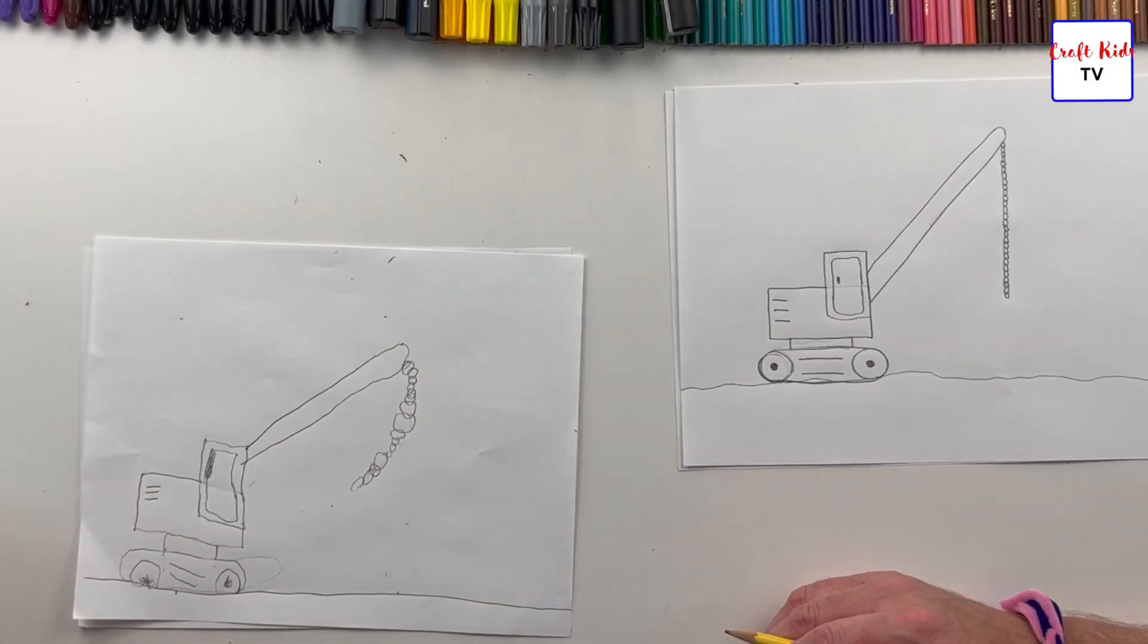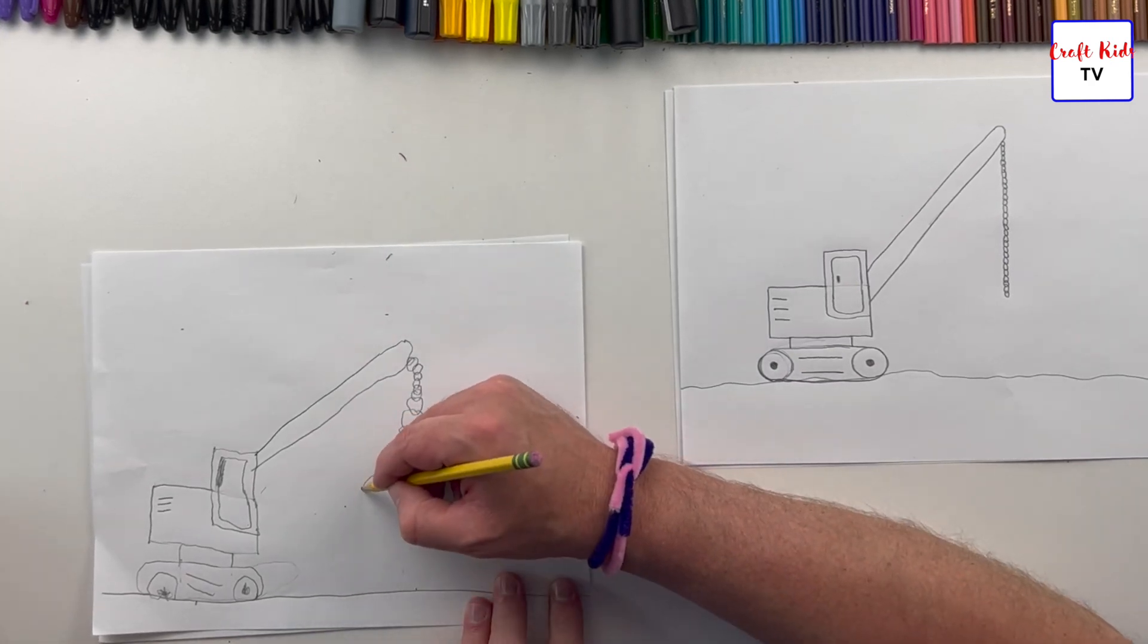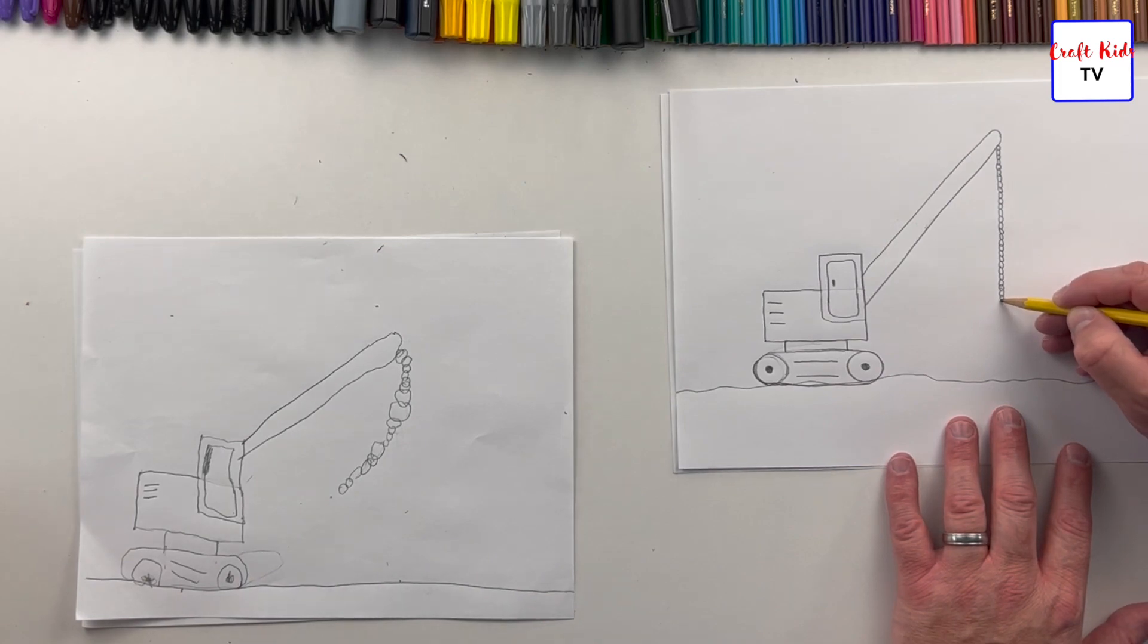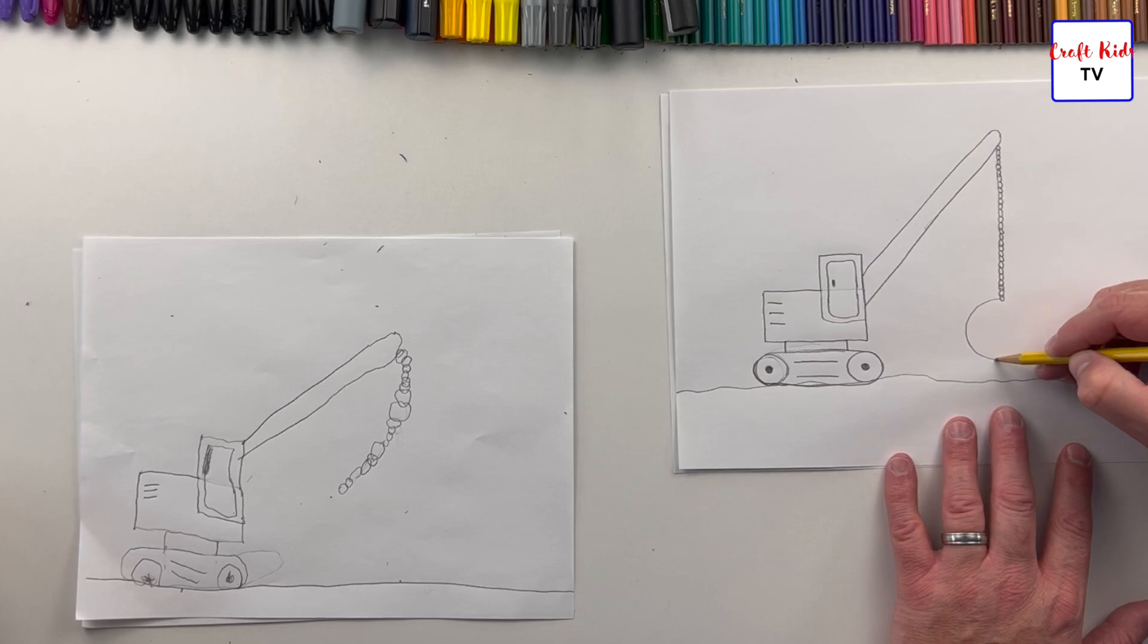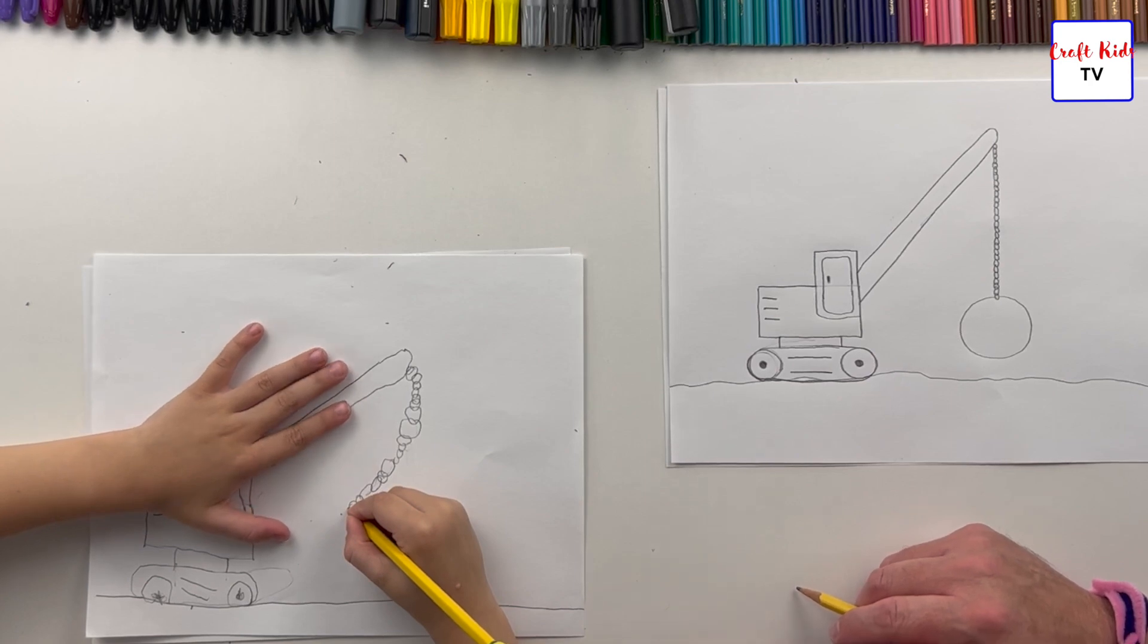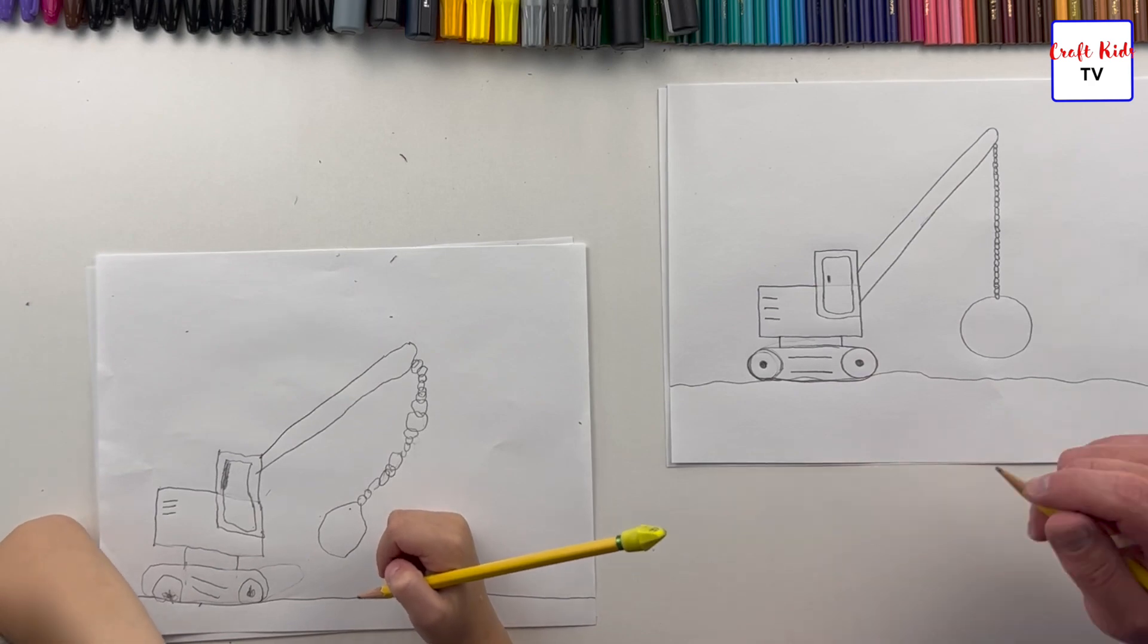And now we're going to draw the big ball. You want yours to be a little bit longer, and then you're going to draw a big circle on the end. A big circle on the end, a big huge wrecking ball. I mean huge. Yours is really good size too.